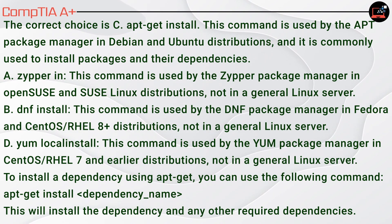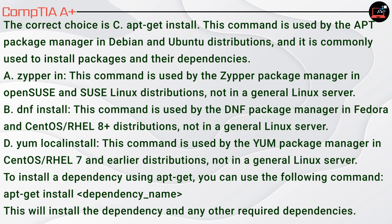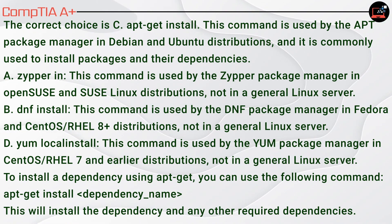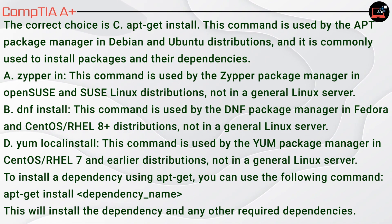To install a dependency using apt-get, use the following command: apt-get install [dependency name]. This will install the dependency and any other required dependencies.